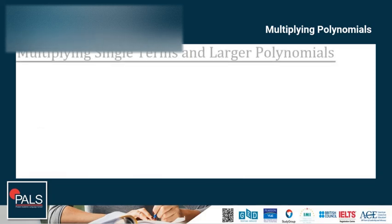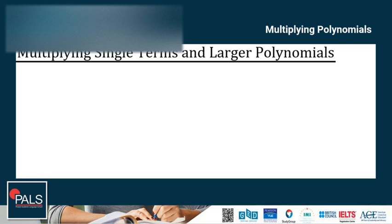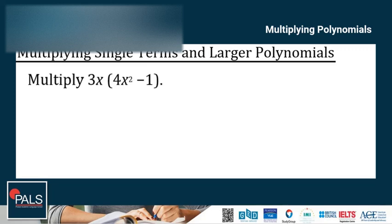Let's proceed to multiplying single terms and larger polynomials. Using the distributive property, you can multiply any polynomial by a single term by distributing the single term to every term in the polynomial. After that, it is just a matter of applying the rules of exponents and simplifying. Let's try some examples.